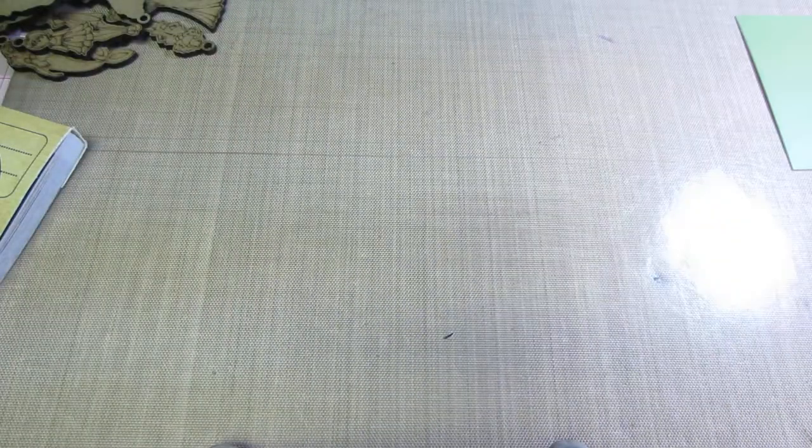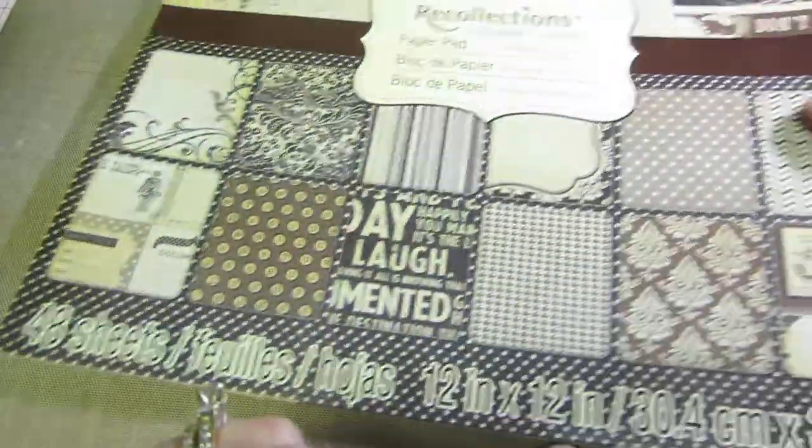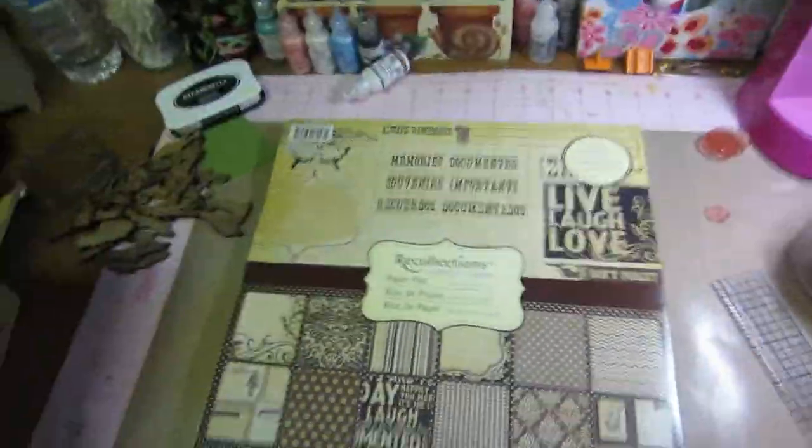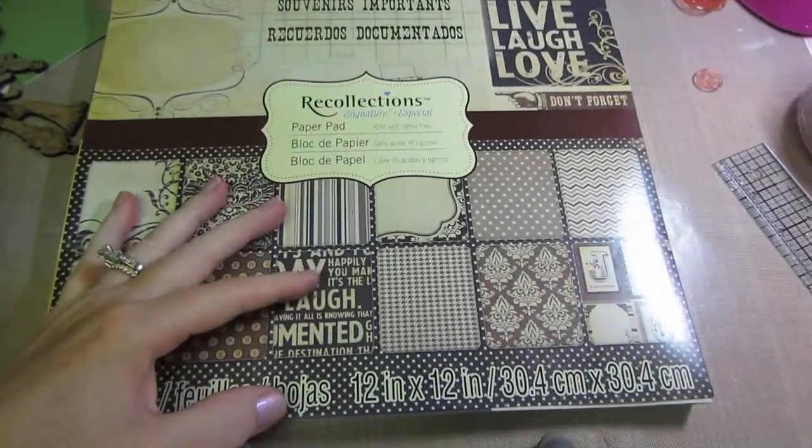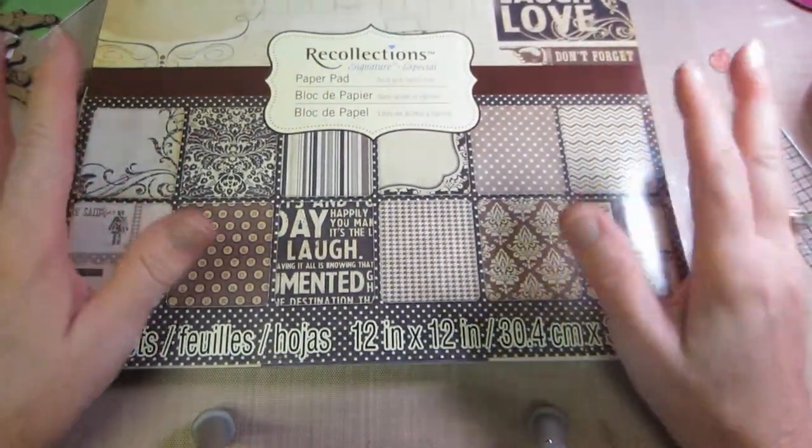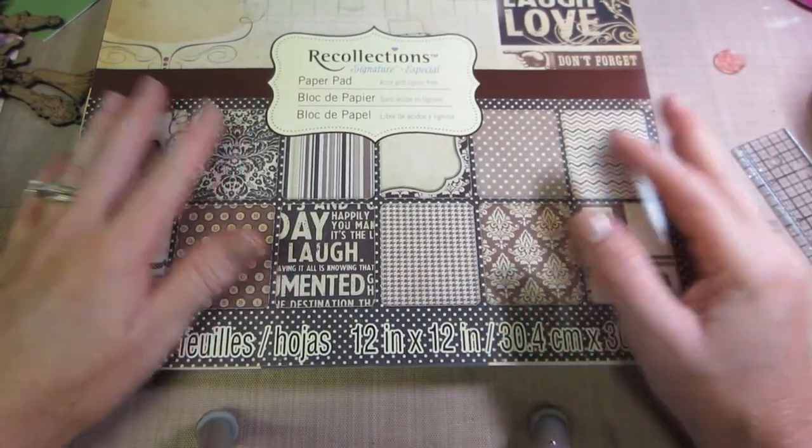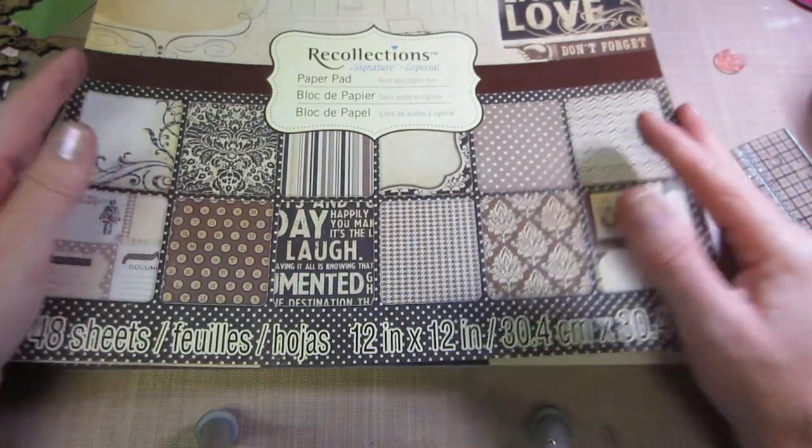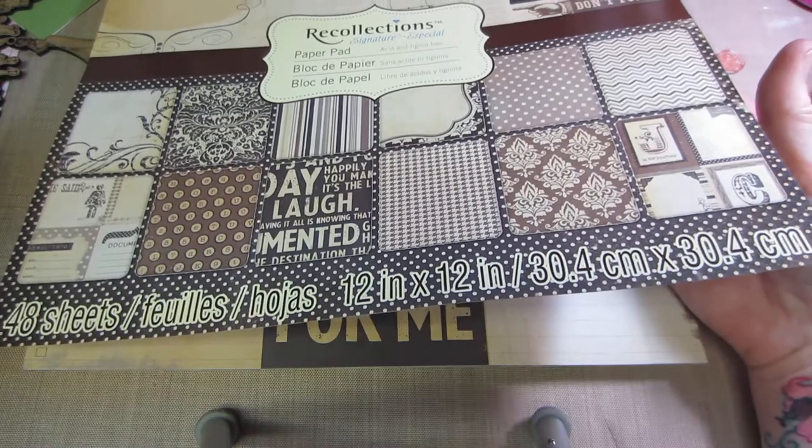And then the last thing I just wanted to show you, I'm making junk journals. I have one in the works now, but I happen to be at Michael's today, and I saw this paper line, and I just thought this is perfect for junk journals. It's a Recollections paper pad, and actually their paper is 40% off this week, so I did get it based on that too, because I hate to spend full price.